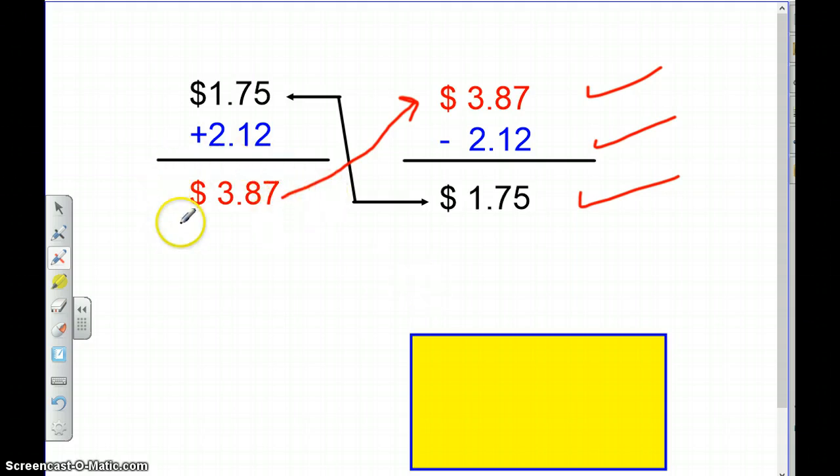You'll notice the sum of our addition problem comes up here to be the whole number that we're subtracting from. And then here, the difference is one of the addends in the addition problem. So the same 3 numbers, they're just switched around.